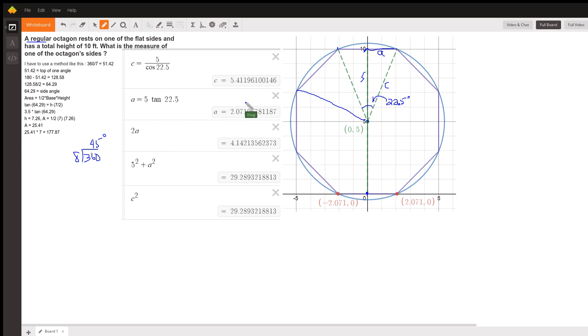That gives me the length of half of one side. So here is 2a right here—that's the total length of one of the sides of the regular octagon. Just for the heck of it, I found c by using 5 divided by the cosine of 22.5.